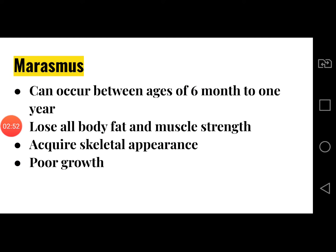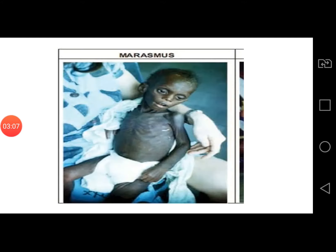Marasmus can occur between the ages of six months to one year. The patient loses all their body fat and muscle strength and acquires a skeletal appearance, and the growth of the child is also poor. This is the picture of a child suffering from Marasmus, and we can see that the body has a skeleton-like appearance.